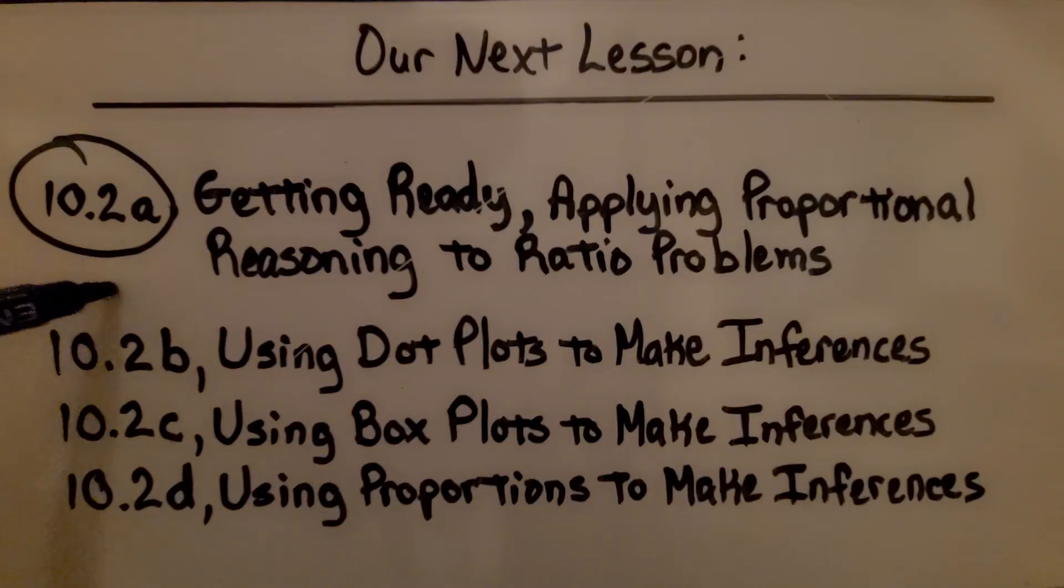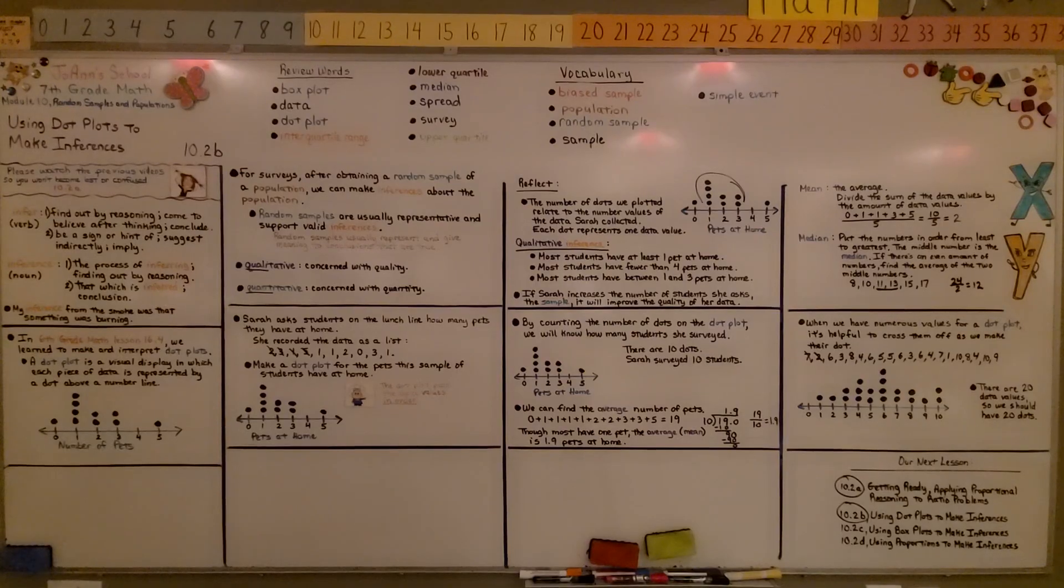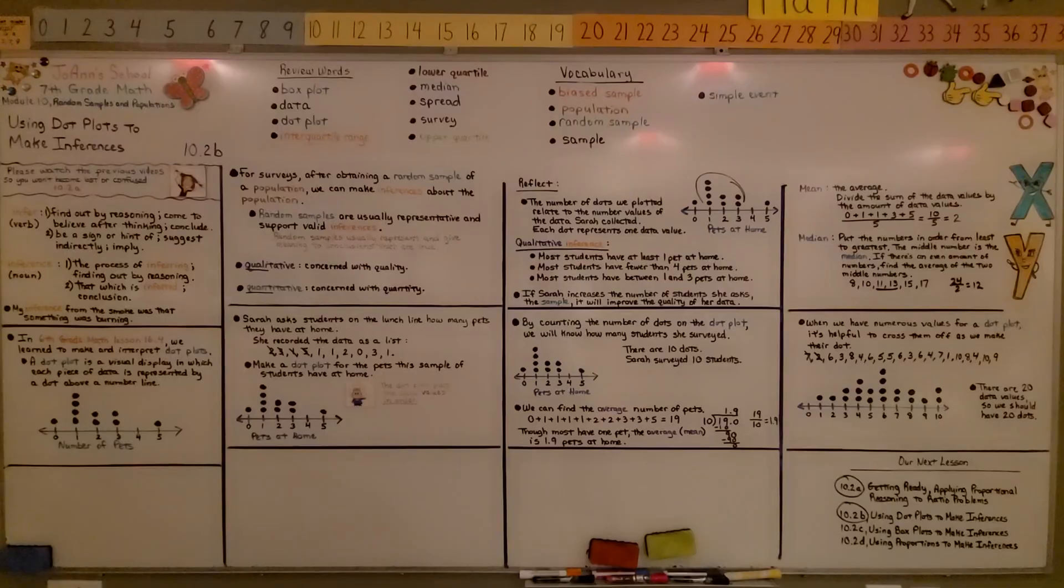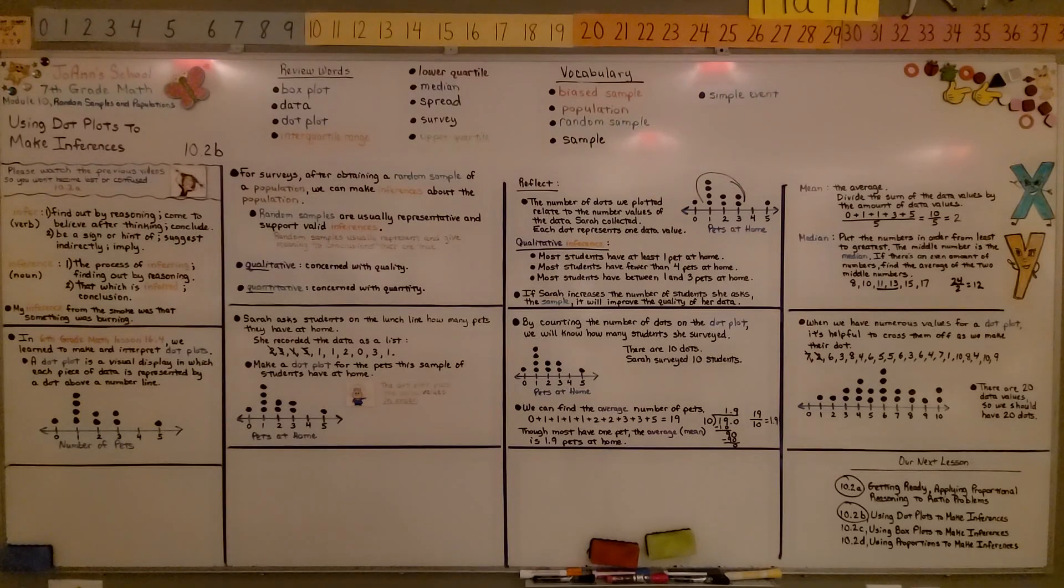We finished 10.2b. We're going to move on to 10.2c using box plots to make inferences. Do you remember box plots from sixth grade? Hopefully you remember a little bit about what we learned in sixth grade for box plots. Remember? They had whiskers coming out on the side. We'll talk about it in the next lesson. Have a wonderful day. Keep trying your best, and I'll see you for the next lesson. Bye.